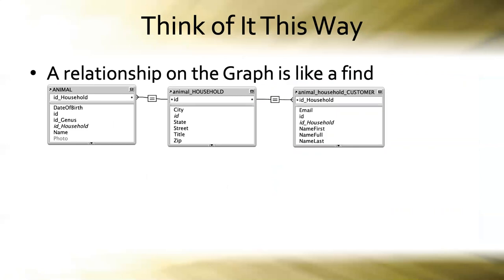We all know how to perform finds in FileMaker and end up with a found set of records. Building a relationship like this one is really just like establishing a set of find criteria baked into the relationship graph. Starting from a record in the animal table, this relationship would let us find the household that animal lives in, and then this relationship would let us find all the customers who live in that same household.